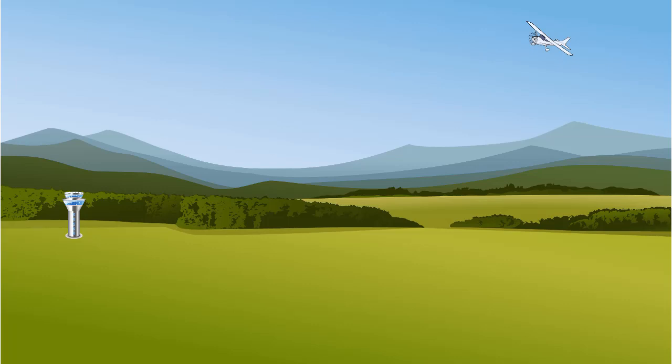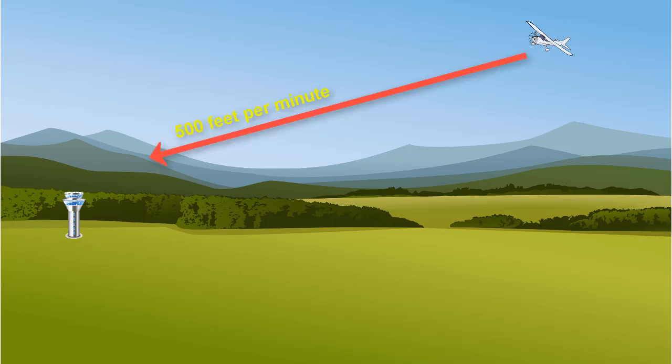You are getting close to the airport you want to land at and you need to start thinking about descending. When should you begin a descent to that airport? The first question to ask is what descent rate you want to take. The common descent rate is 500 feet per minute, and we will use that in this example.